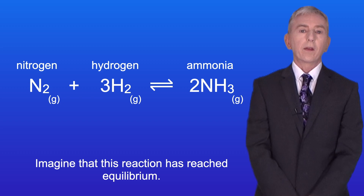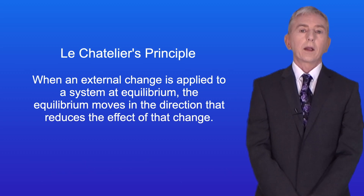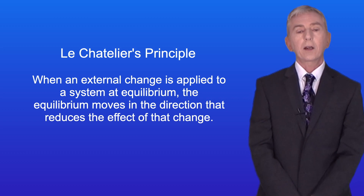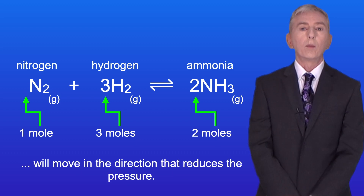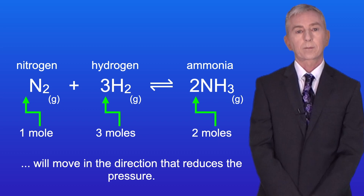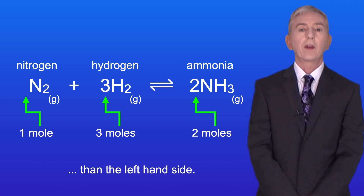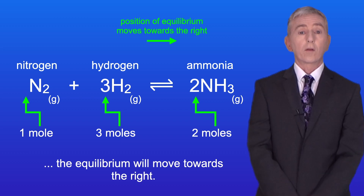Imagine that this reaction has reached equilibrium. What would happen to the position of the equilibrium if we increase the pressure? Going back to Le Chatelier's principle, when an external change is applied to a system at equilibrium, the equilibrium moves in the direction that reduces the effect of that change. We're increasing the pressure, so the equilibrium will move in the direction that reduces the pressure. The right hand side of the equation has fewer moles than the left hand side, so in order to reduce the pressure the equilibrium will move towards the right.